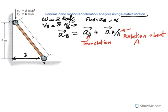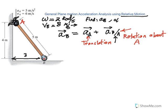Acceleration of B relative to A means finding acceleration of B as if A is fixed. If A were fixed, in pure rotation, acceleration has two components: a normal component pointing toward the center of rotation, and a tangential component perpendicular to it. We know the bar is rotating counterclockwise, so we'll assume alpha is also counterclockwise. The tangential component of B's acceleration will be in the direction of the assumed alpha.